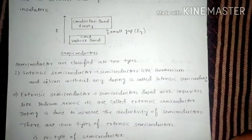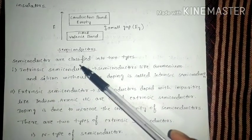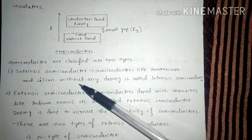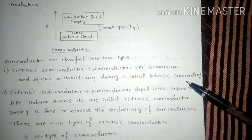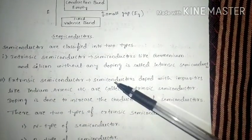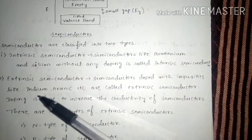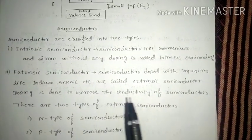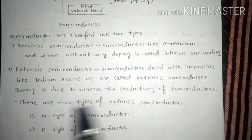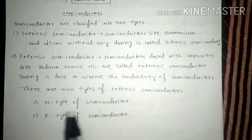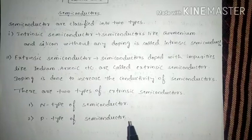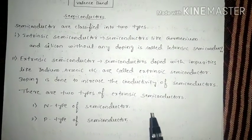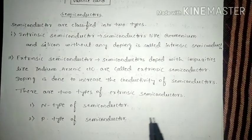Semiconductors are classified into two types: intrinsic semiconductors and extrinsic semiconductors. Intrinsic semiconductors, like germanium and silicon, are without any doping. Extrinsic semiconductors are doped with impurities like indium, arsenic, etc. Doping is done to increase the conductivity of semiconductors. There are two types of extrinsic semiconductors: N-type and P-type, classified on the basis of the type of dopant — trivalent or pentavalent.